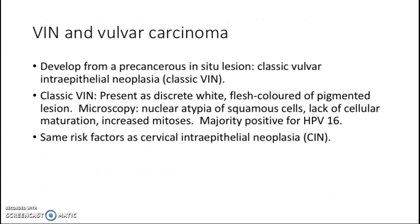Vulvar carcinoma develops from precancerous in situ lesion, also known as classic VIN. Classic VIN presents as discrete white, flesh-colored or pigmented lesion. Microscopically, it presents as nuclear atypia of squamous cells, lack of cellular maturation, and increased mitosis. The majority of these lesions are positive for HPV-16, which is the high oncogenic risk HPV. It has the same risk factors as cervical intraepithelial neoplasia.